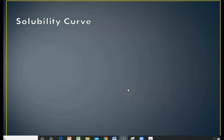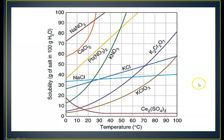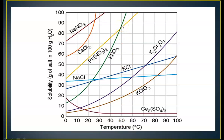Next let's look at the solubility curve. This shows the amount of salts — these are all salts — that can be dissolved per 100 grams of water, so grams of salt per 100 grams of water, from 0 to 100 grams of salt, as a function of temperature. For instance, at potassium nitrate at 0°C, we can dissolve 10 grams of potassium nitrate in 100 grams of water. If we go to 50°C, we can dissolve about 87 grams of potassium nitrate. What this shows is that for most of these salts, solubility increases as temperature increases, with a few exceptions.